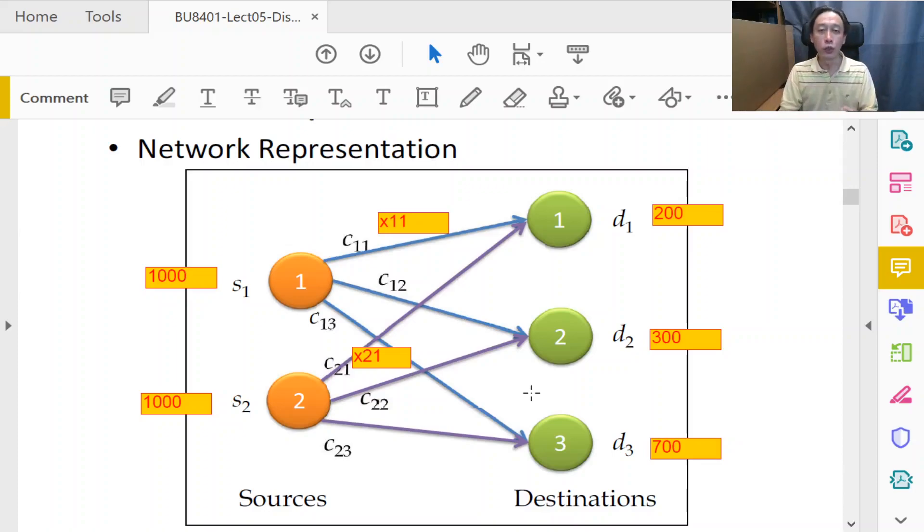We need a way to tell our model that no matter how you dispatch the quantities from factory one to customers, the total outgoing quantities - represented by the blue arrows - must add up to no larger than your capacity.